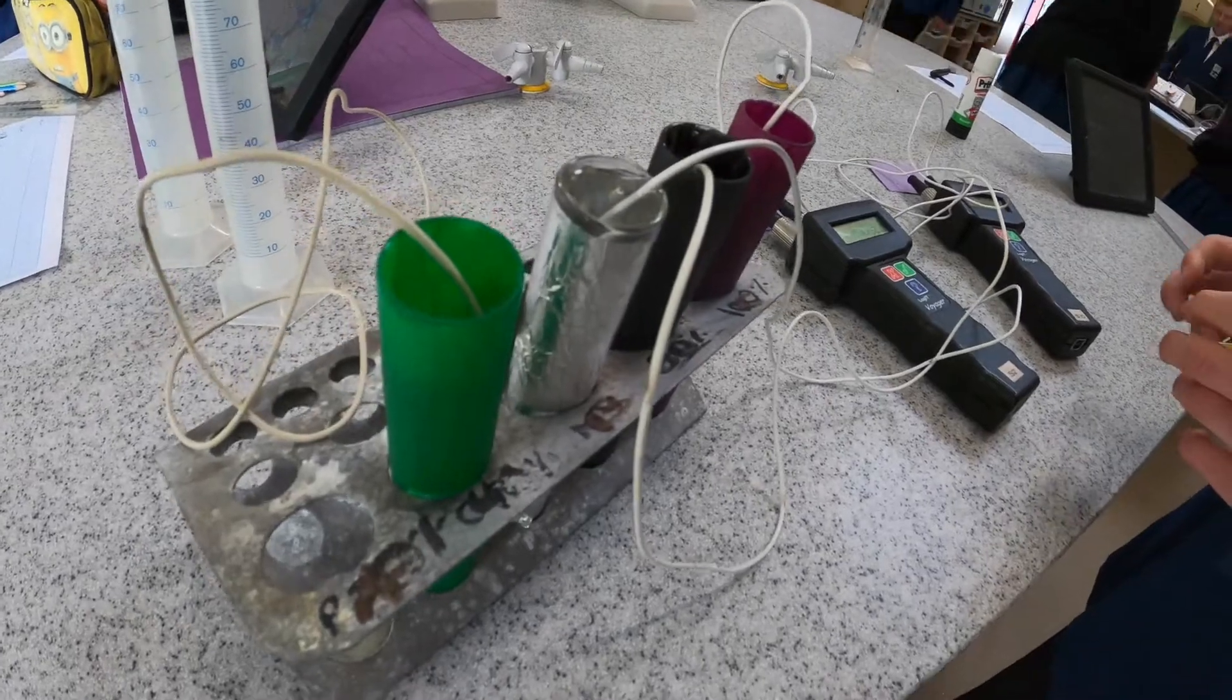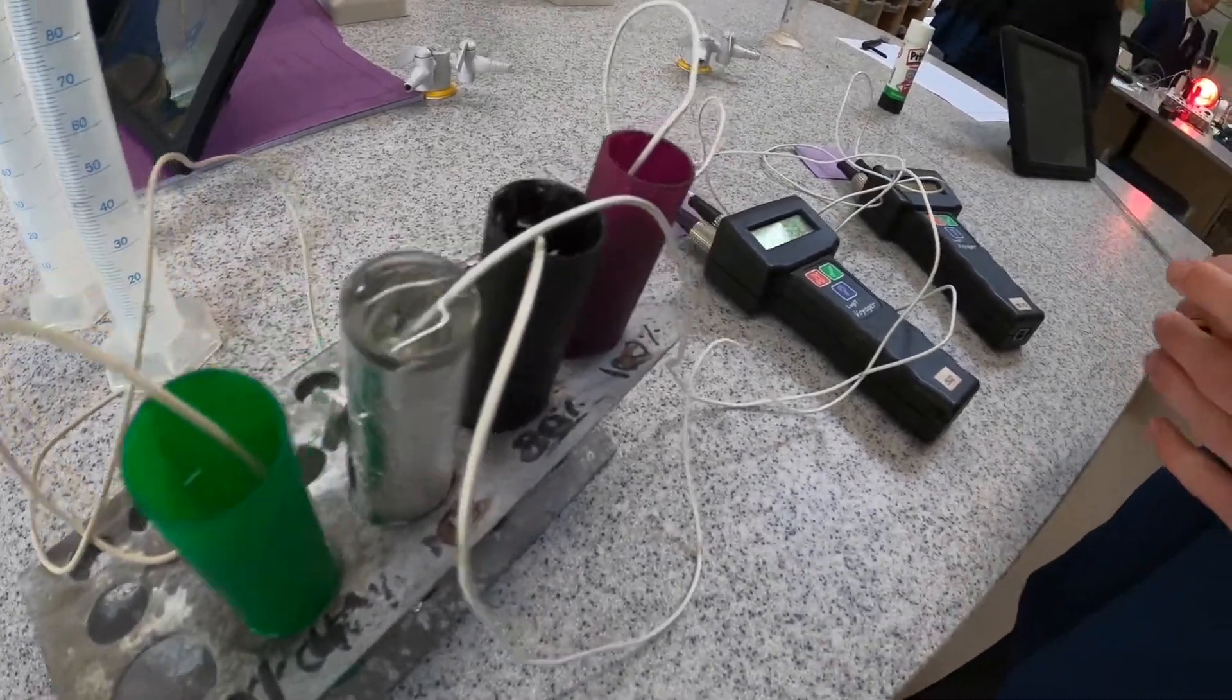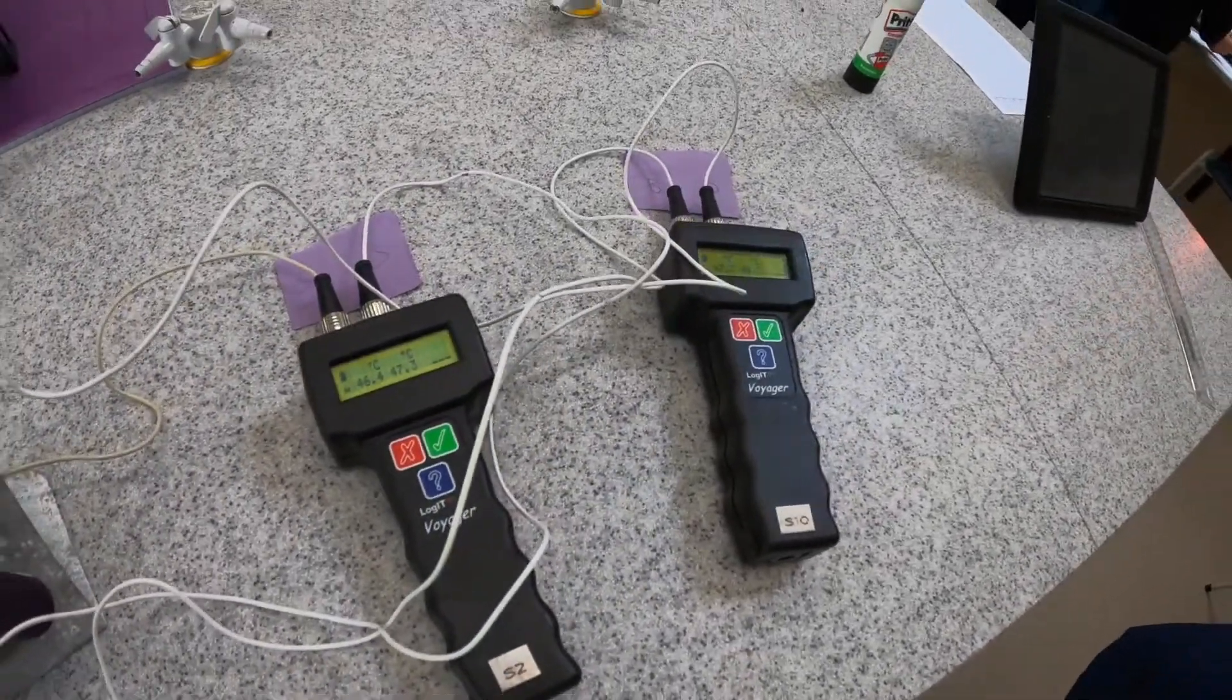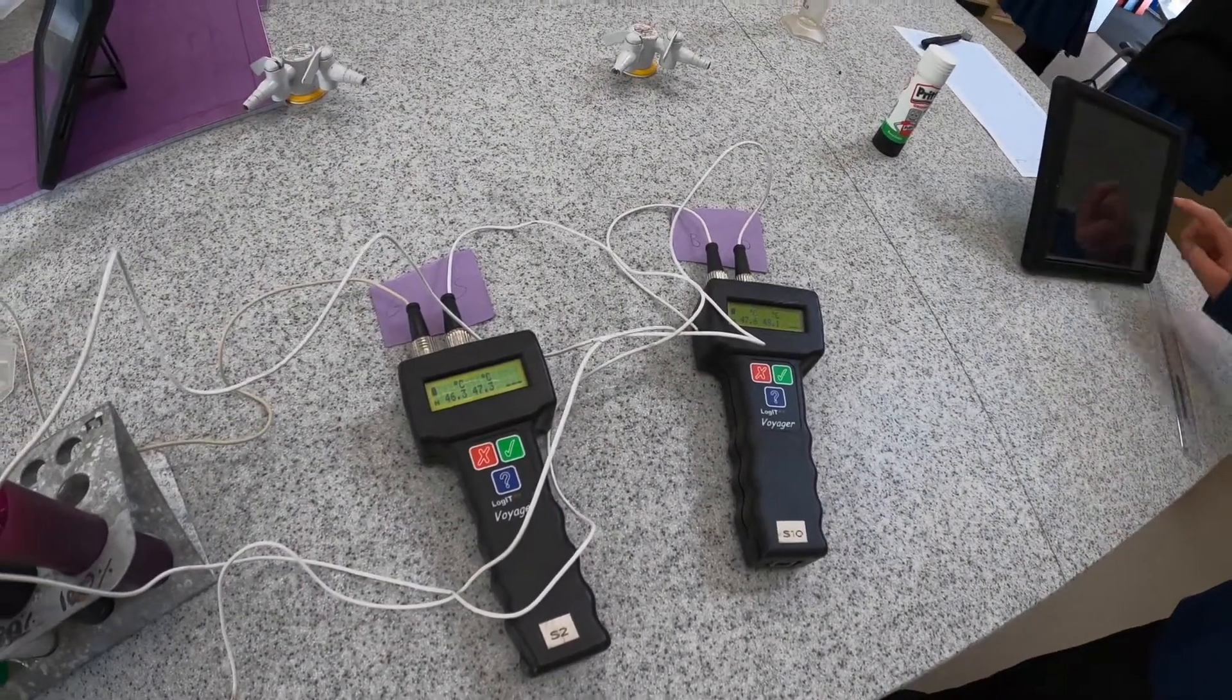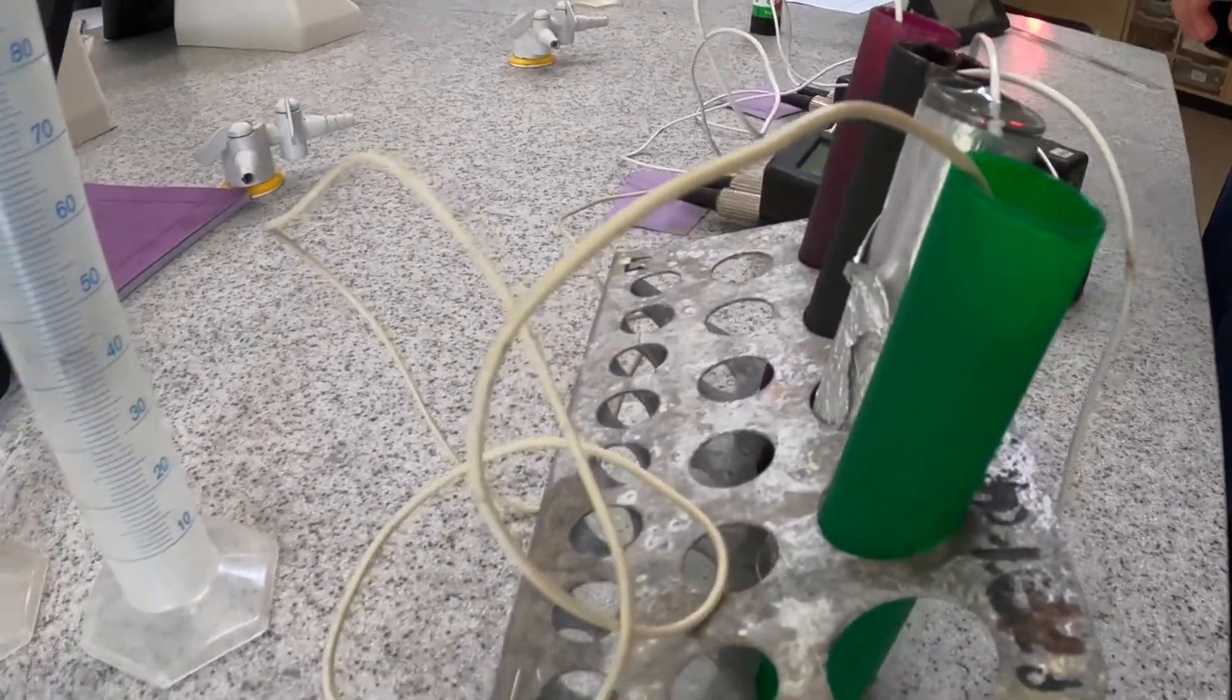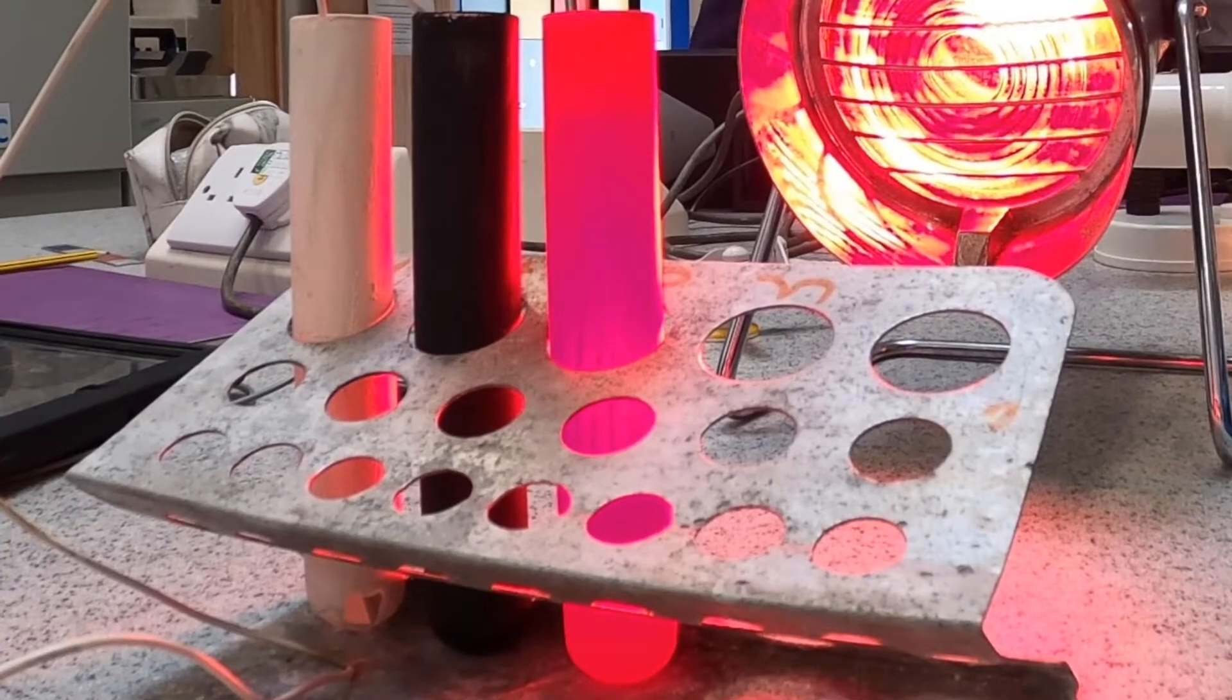Here's another example where we've got two set up. Here's another example where we've got four. Now this one's slightly different. Here we are seeing how much radiation is emitted by hot water from different colors. So we've got green, silver, black, and purple on that one.